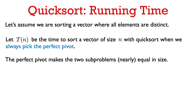First, we'll imagine the algorithm always does the best it possibly can: in every call to QuickSort we're somehow magically able to choose the best possible pivot. The best pivot to choose is the median, which makes the sub-problems as equal in size as possible. Let T(n) be the running time of QuickSort under this assumption.